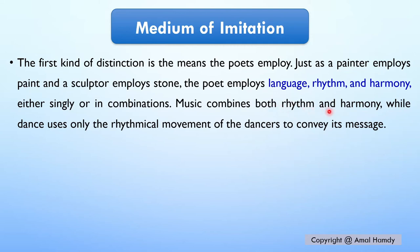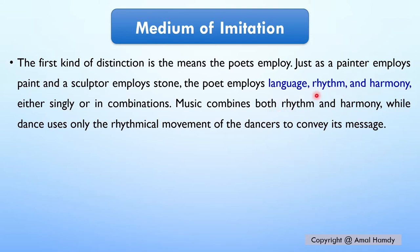The first distinction is the means the poets employ. Just as a painter employs paint and a sculptor employs stone, the poet employs language, rhythm, and harmony — either singly or in combination. Music combines both rhythm and harmony, while dance uses only the rhythmical movement of the dancers. Each medium can be used alone or combined with another.